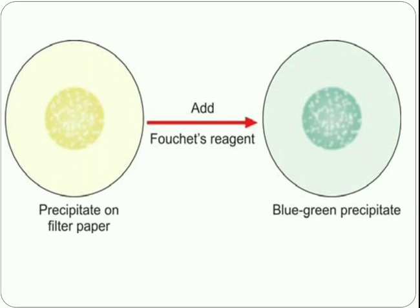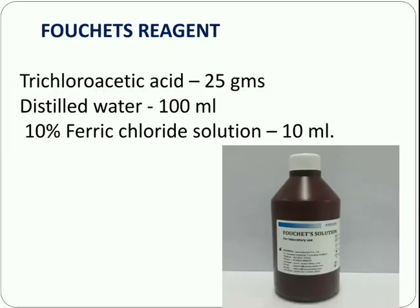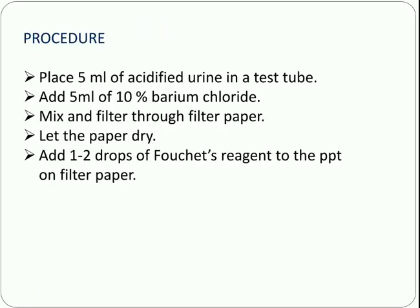To perform Fauci's test, we need Fauci's reagent, which contains trichloroacetic acid, distilled water, and 10% ferric chloride solution. For the procedure: place 5 ml of acidified urine into a test tube, then add 5 ml of 10% barium chloride, mix, and filter through filter paper. Let the paper dry. After the filter paper dries, add 1 to 2 drops of Fauci's reagent to the precipitate on the filter paper.